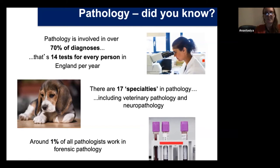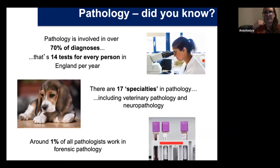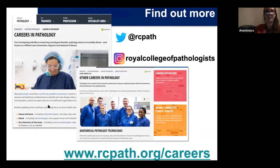Only one percent of pathologists work in forensic pathology — it's a very small subspecialty. You don't get employed by the NHS; you're employed by the Home Office, and there aren't many jobs available. If you're going into medicine just to be a forensic pathologist, be prepared to change your mind. To find out more, look at the Royal College of Pathologists website, contact your local medical school, or visit a local hospital pathology lab — they'll be happy to talk to you.